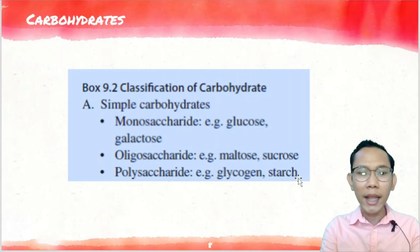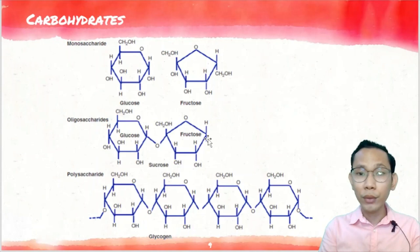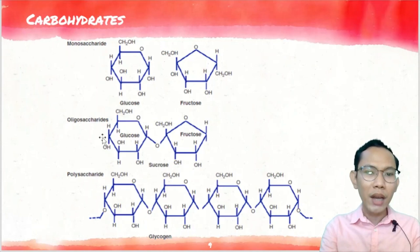This is the basic structure of your simple sugars. For oligosaccharides, sucrose is a combination of one unit of glucose and one unit of fructose. The bond connecting glucose and fructose is your glycosidic bond. For polysaccharides — more than 10 units of sugar — your glycogen.